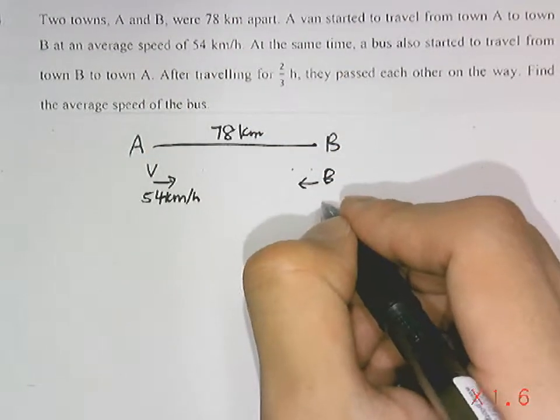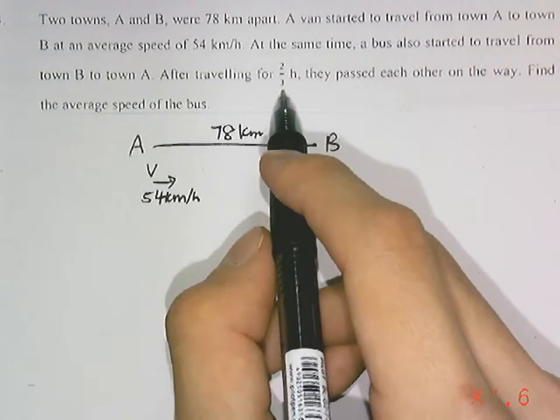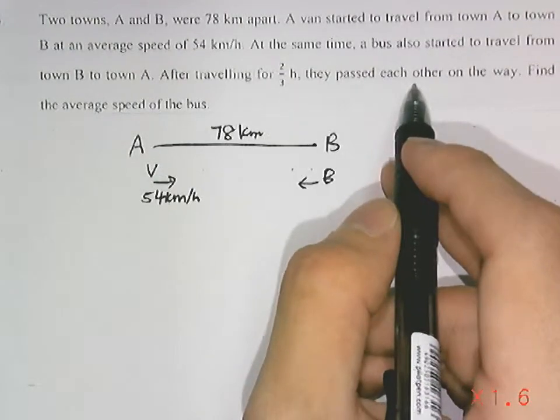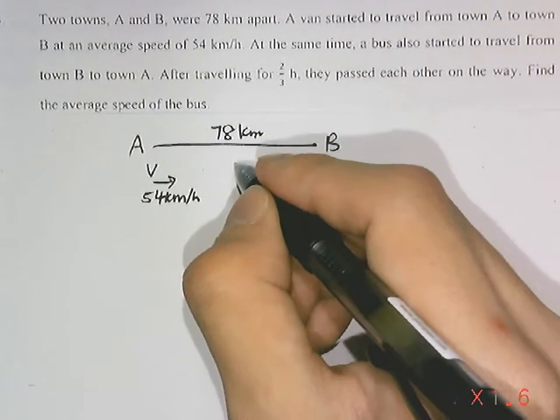We don't know the speed here, but we know that after traveling 2/3 hours they will pass each other. So that means for 2/3 hours...